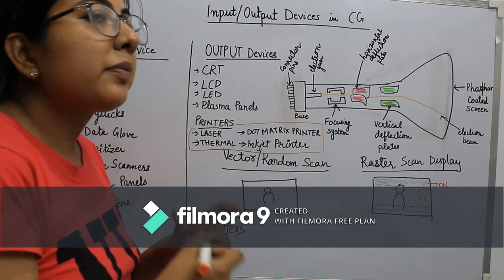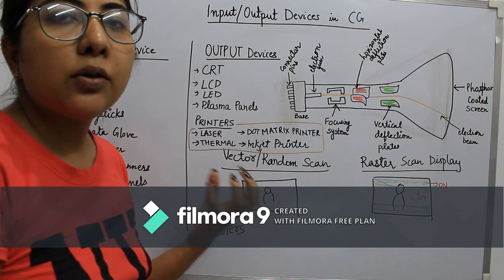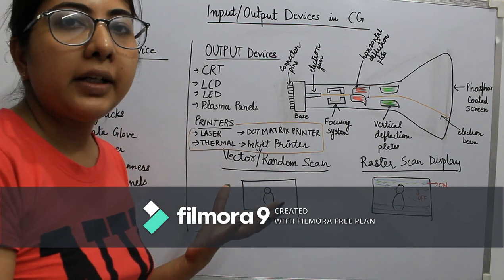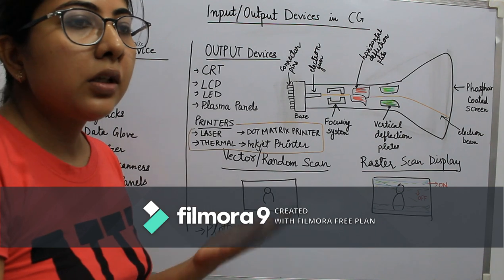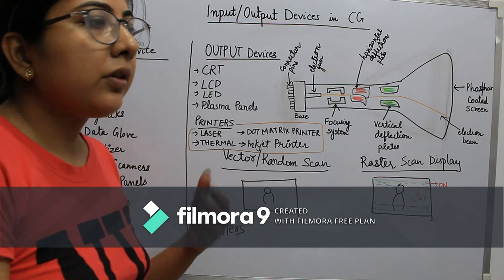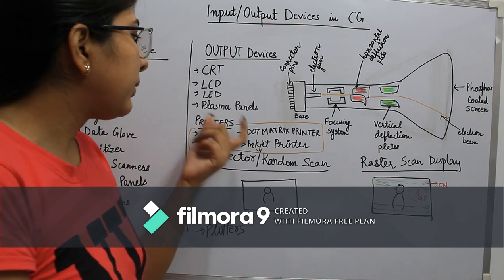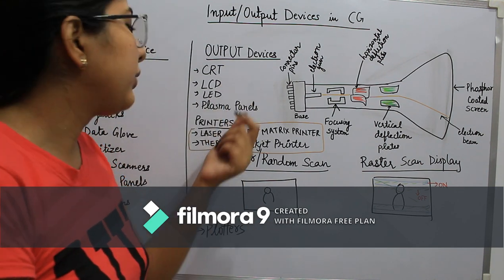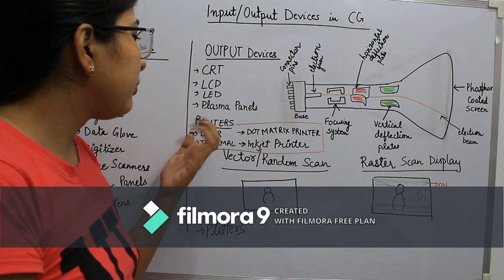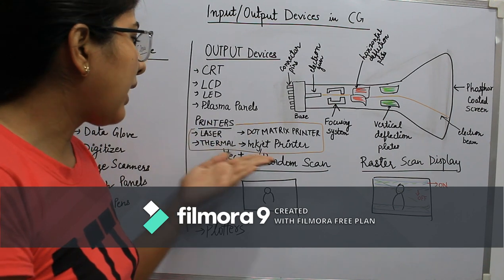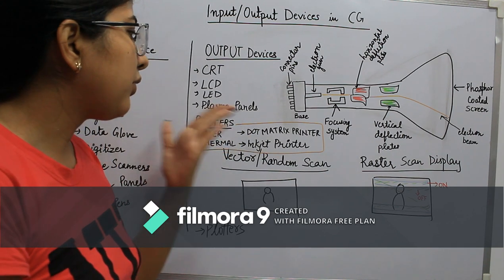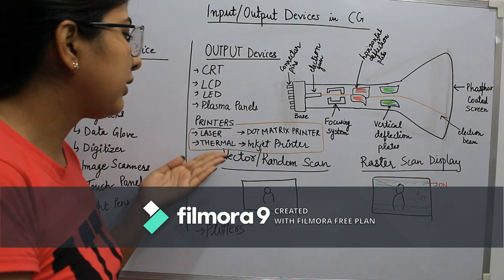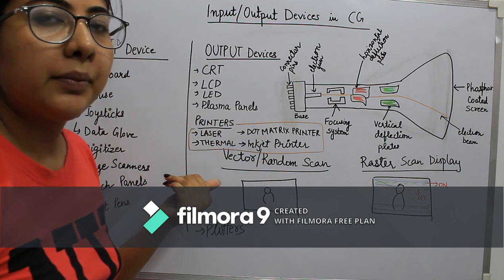Looking at output devices, printers are also a part, because you are sending outputs to your printer. There are so many types: laser printer, dot matrix printer, thermal, and inkjet printer.